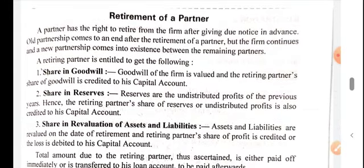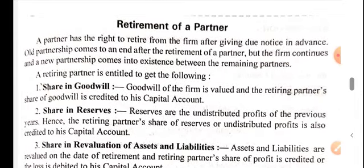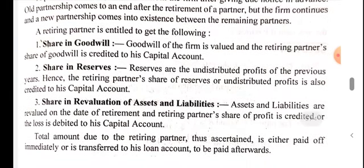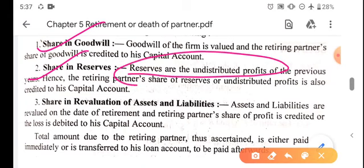Retirement of a Partner - meaning: a partner has a right to retire from the firm after giving due notice in advance. When a partner retires, the old partnership comes to an end and a new agreement comes into existence, while the firm continues. Old relationships break and new relationships emerge. When a partner retires, he will get a share in goodwill because he has worked for many years.